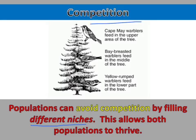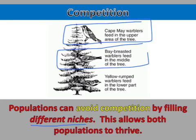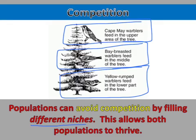The Cape May warbler feeds in the upper part of the tree. The Bay-breasted warbler feeds in the middle. And the Yellow-Rumped warbler feeds in the lower part of the tree. Because they occupy different niches by staying in different parts of the habitat, they are able to avoid competing with each other.